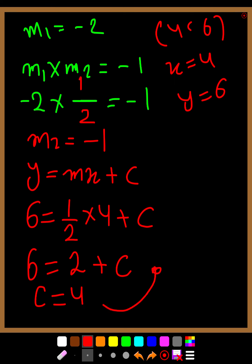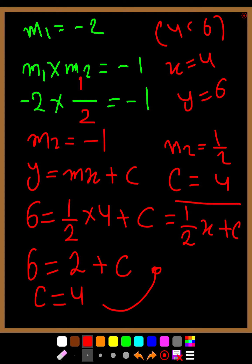So we have found m2 equals one-half and c equals 4. The equation of the perpendicular line is y equals one-half x plus 4. Both lines are perpendicular to each other. I hope this is clear. Thank you for watching, don't forget to subscribe, and have a nice day everyone.